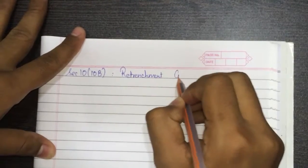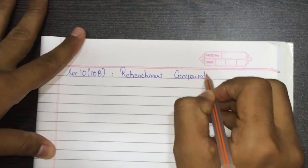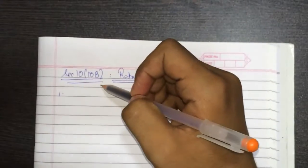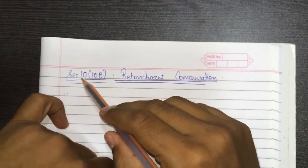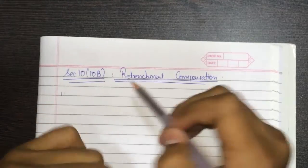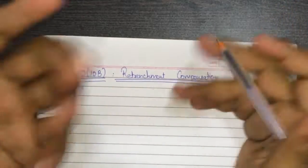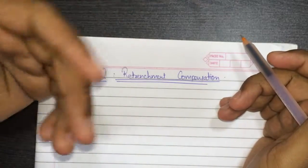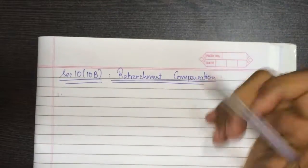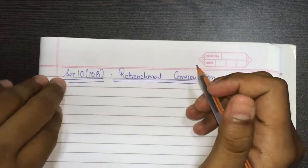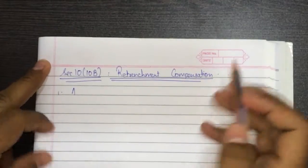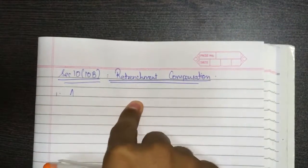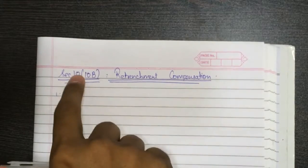Retrenchment compensation falls under Section 10(10B). To remember this, Section 10(10B) and (10C) — think 'bhaga hua employee,' meaning the employee who has been removed. A retrenched employee has been completely removed from the organization. Since retrenchment compensation is received from the employer, it enters the computation of total salary, but there is an exemption under Section 10.